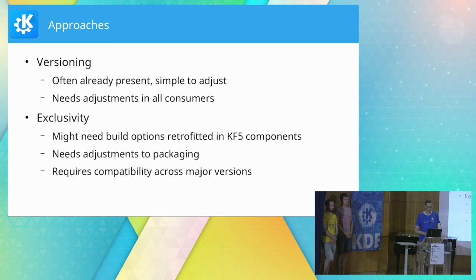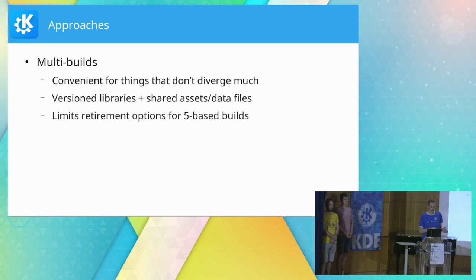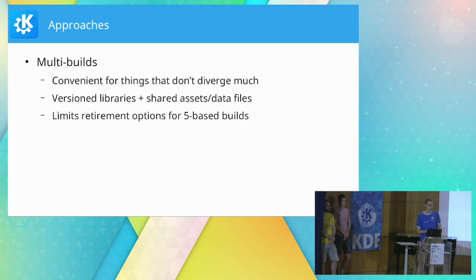A much less commonly used approach is multi-builds, where the same codebase with a single run of the build system produces libraries for both Qt versions. We haven't historically used this in KDE. A prominent example is Poppler, which produces Qt bindings for both versions. This has been proposed by David and Harald for Phonon and potentially for the Breeze style. However, it requires that the KF5 and KF6 codebases stay aligned, and it limits our ability to eventually retire Qt 5 support — if we do this too early we end up with the same co-installability problem again.